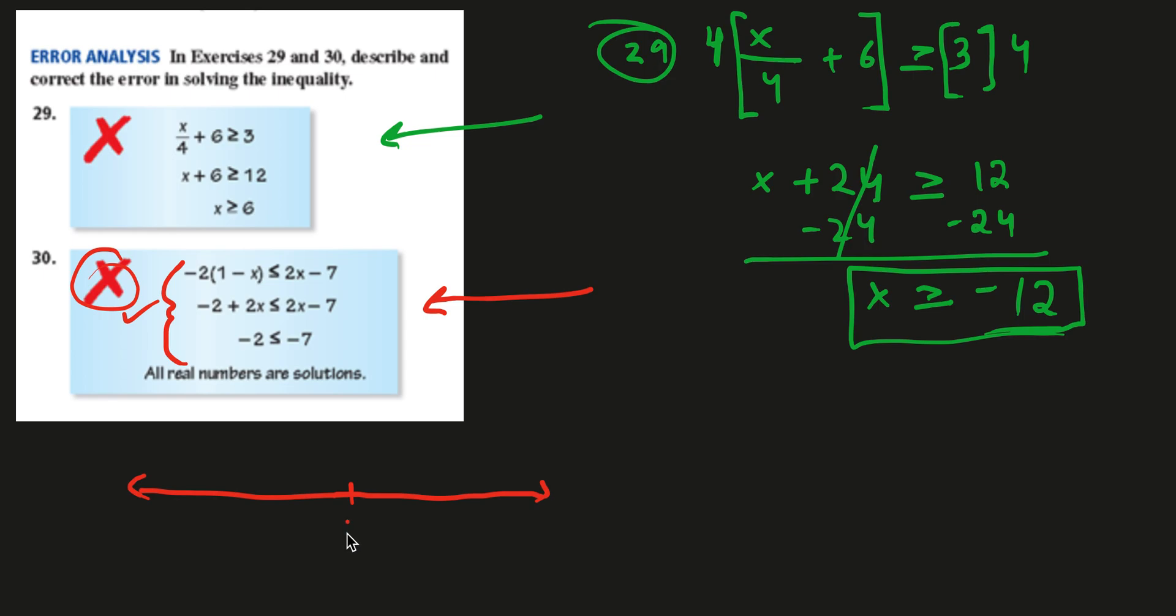We have 0, we have negative 1, negative 2, negative 3. I'm going to run out of space. Negative 4, negative 5, negative 6, and negative 7.